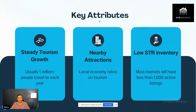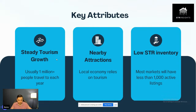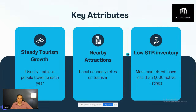Let's talk about the key attributes. Here are the three things beyond just rental revenue. Rental revenue is something I look at last after I've done these three. Number one — talked about in the definition — is steady tourism growth. How many people are traveling to that region? In a consistently emerging market, I like to see around 900,000 to 1 million-plus people traveling there each year. We want to see year-over-year growth.